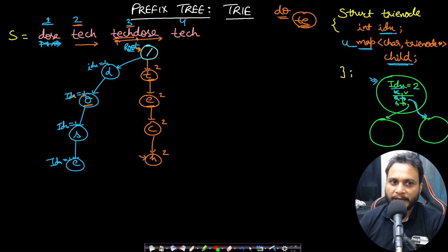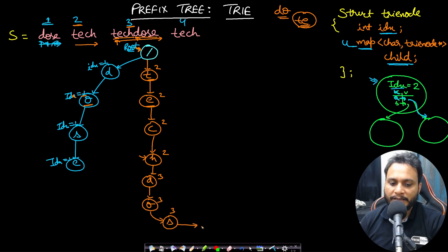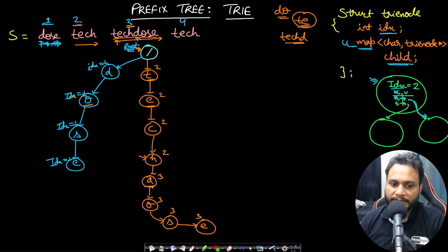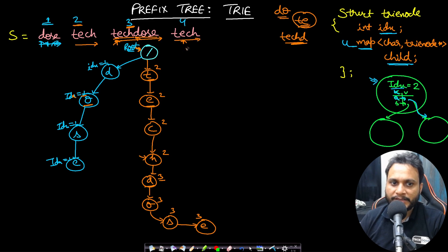I can traverse 't,' 'e,' 'c,' 'h' and reach this point. From here I need to insert 'd,' 'o,' 's,' 'e.' When I make a new node 'd,' I write index 3 (the current index). Then 'o' with current index 3, 's' with current index 3, and 'e' with current index 3. Now if I'm given a search word like 'techd,' I will stop at this 'd' and return 3 — meaning 'techd' occurs as a prefix first in the leftmost word at index 3.